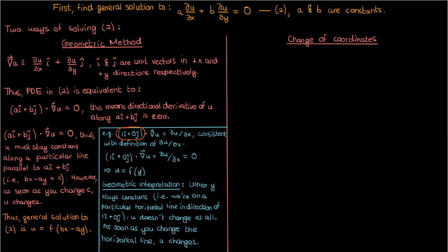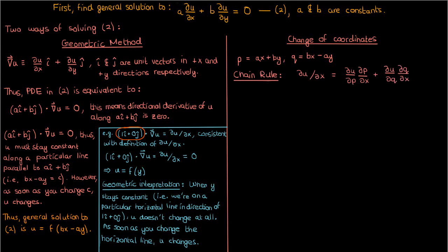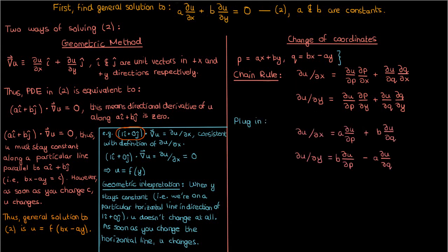There's also a more computational way to find the solution, which involves introducing new independent variables p and q defined in terms of x and y. We replace the partial derivatives du/dx and du/dy by du/dp and du/dq using the chain rule. The partial of u with respect to x becomes the partial of u with respect to p times the partial of p with respect to x, plus the partial of u with respect to q times the partial of q with respect to x. Similarly for the partial with respect to y. Using the definitions of p and q, we plug in the values for their partial derivatives.